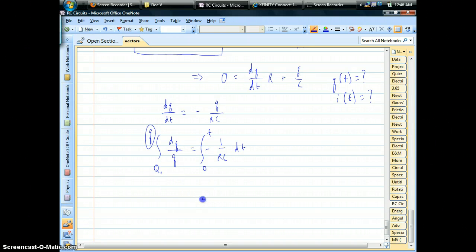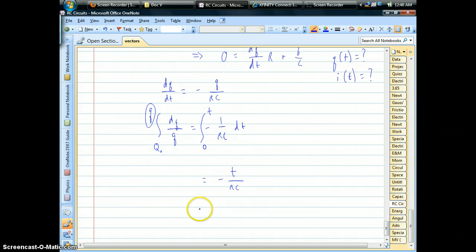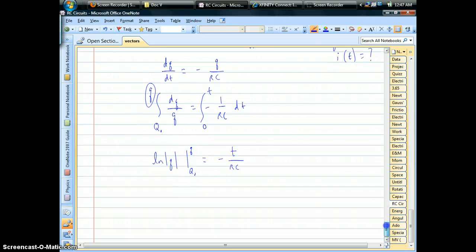The right-hand side is pretty trivial. It's just going to be whatever our time period is over RC. It's not so bad on the left-hand side, it's going to be natural log of the charge. And we have to evaluate that from our initial to final charge.